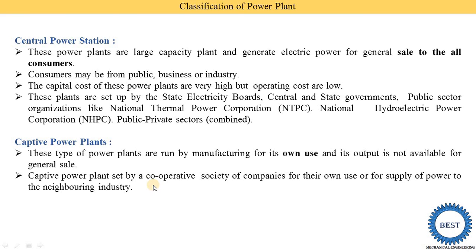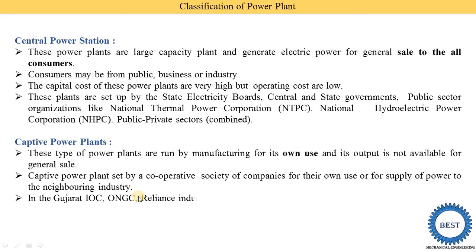A captive power plant is set up by a cooperative society or company for their own use. They may also supply power to neighboring industries, but not in large quantities — only in smaller quantities.